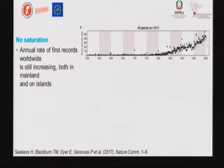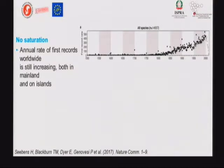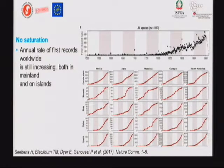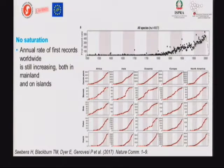Based on a paper we published last year in Nature Communications, compiled from data around the world, the number of invasive species is still growing everywhere in the world constantly — there is no saturation, no slowing down. This is happening in all taxonomic groups, from plants to vertebrates to invertebrates, and in all regions of the world — North America, Africa, Asia, everywhere. Unfortunately, so far we haven't managed to slow down or halt invasions.